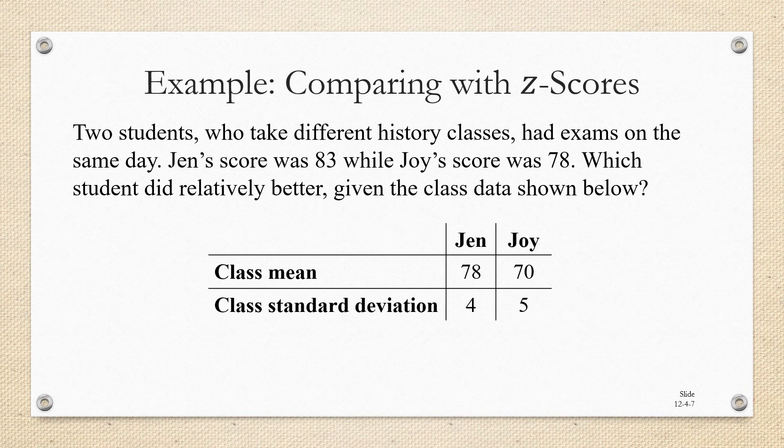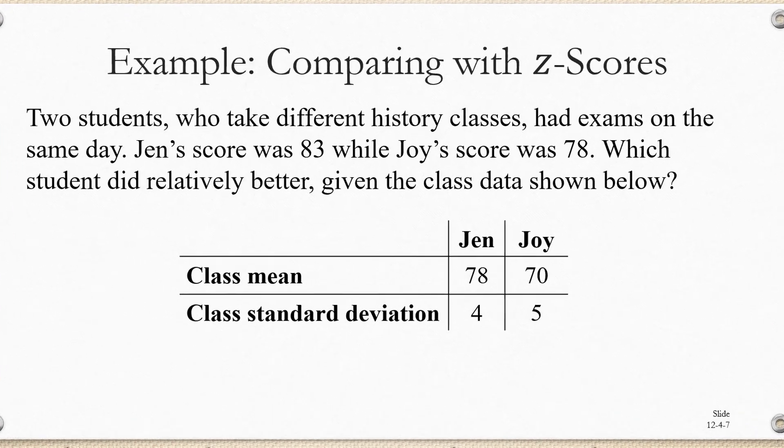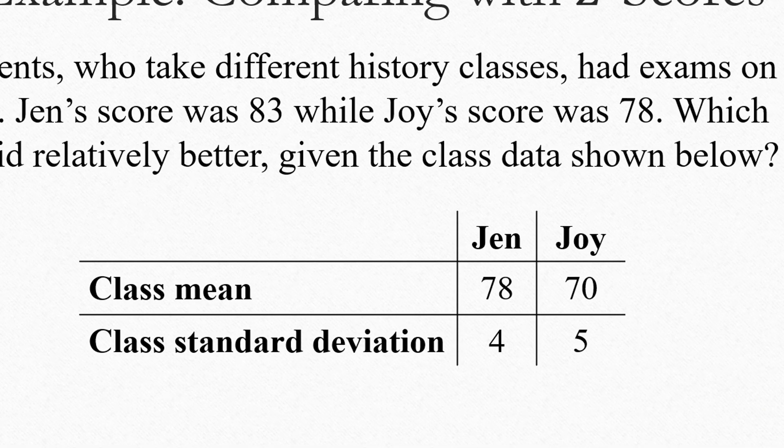Here's an example of how we can use these scores to help us compare data sets. Two students who take different history classes had exams on the same day. Jen's score was 83 while Joy's score was 78. Which student did relatively better, given the class data shown below. And they give us the class mean. In Jen's class, the average turned out to be 78. In Joy's class, it was 70. And they tell us the standard deviations.